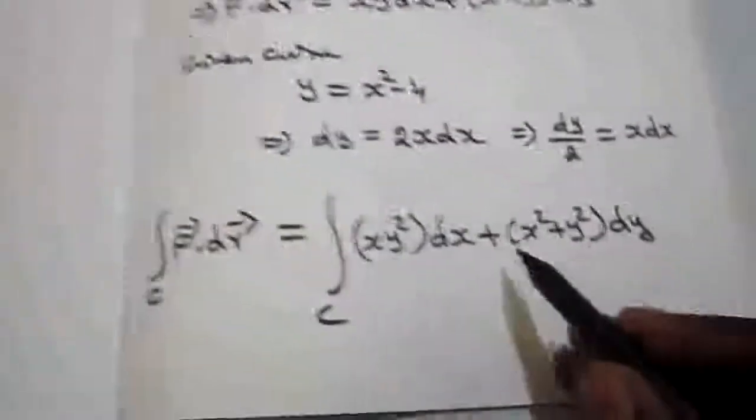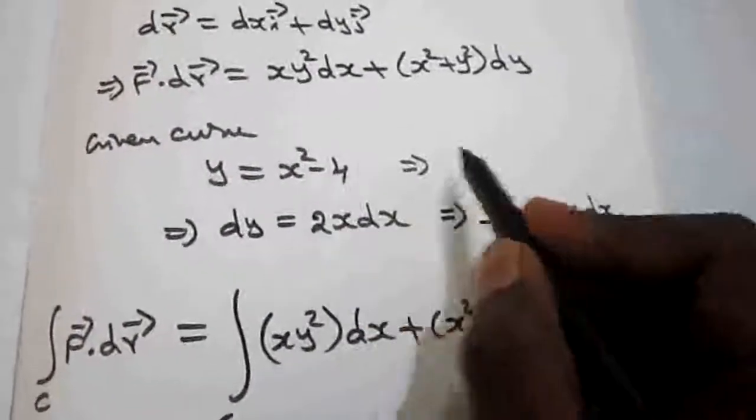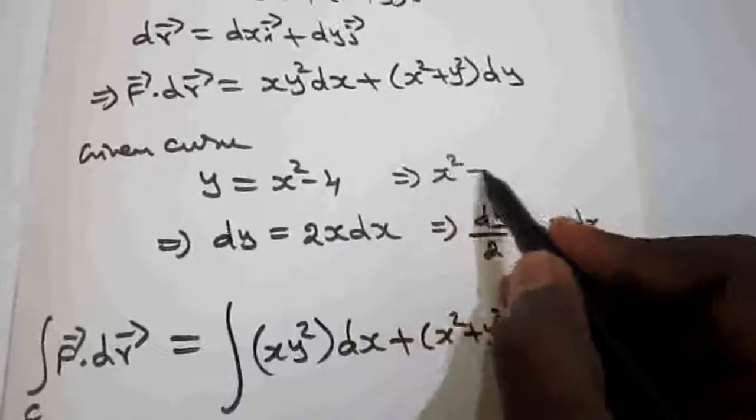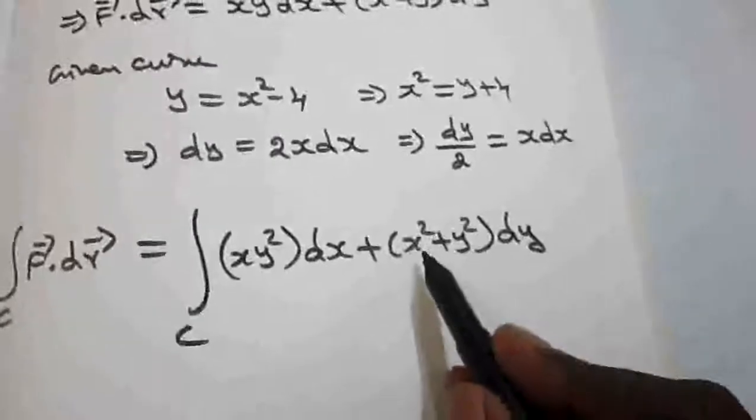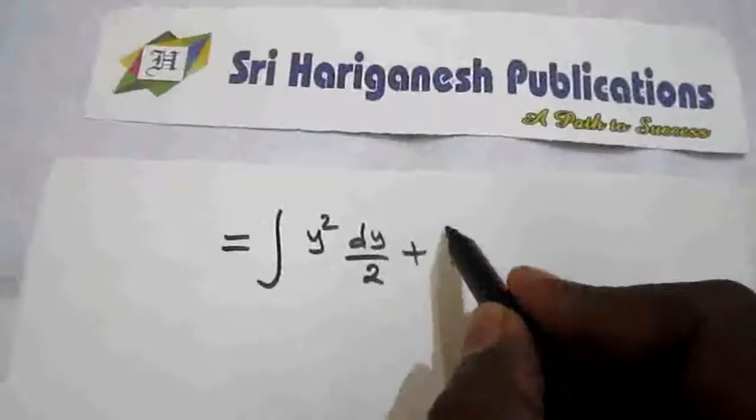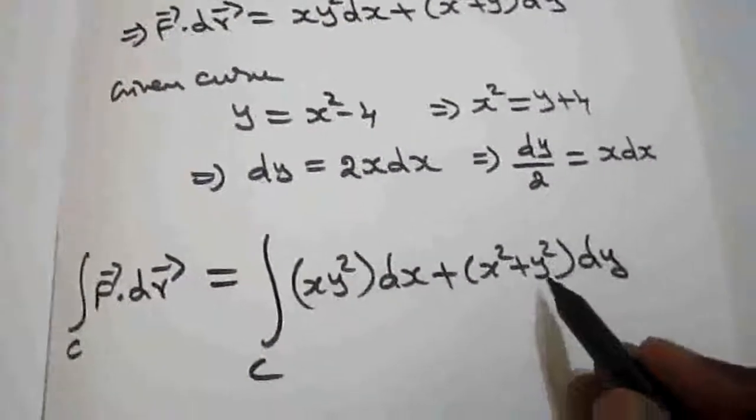And now plus x². What is x² here? From this, x² is y + 4. We have to take minus 4 here, so x² is y + 4. So now plus (y + 4) + y² into dy.